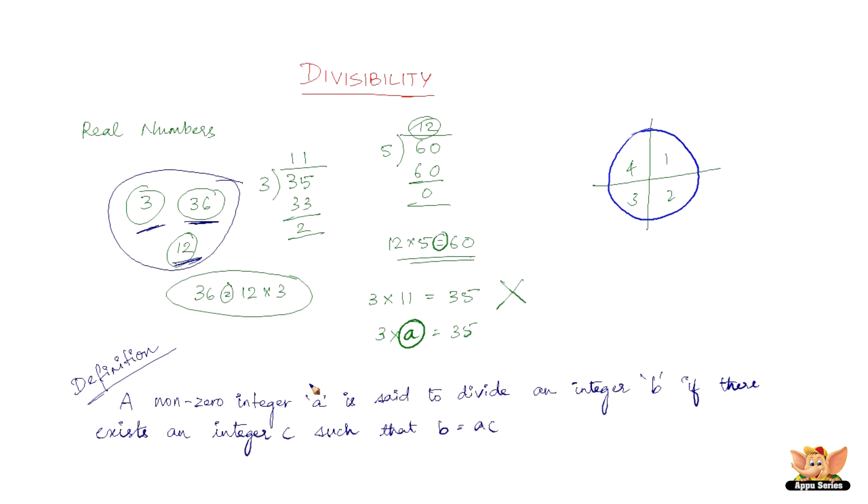Now another thing that we need to learn is, say for example, if a non-zero integer A divides an integer B, then how do we write it? We write it like A divides B. So this is read as A divides B. When A divides B, we say that B is divisible by A or A is a factor of B. Or rather B is a multiple of A or A is a divisor of B.